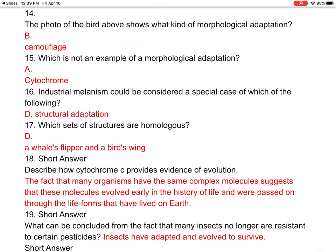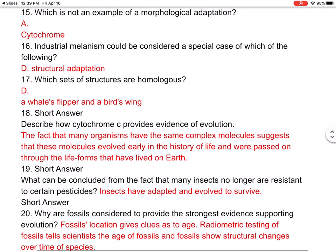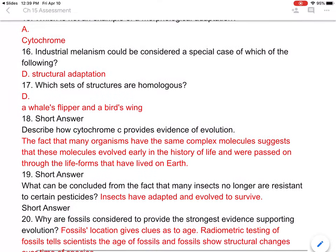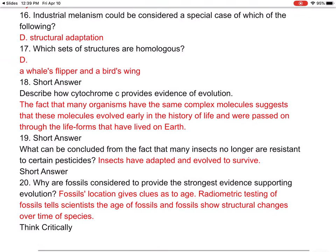The photo of the bird in your book shows camouflage as a morphological adaptation. Number fifteen: which is not an example of a morphological adaptation? Answer A — cytochrome, which you can read about more in your biology book. Number sixteen: industrial melanism could be considered a special case of which of the following? Answer D — structural adaptation.